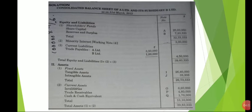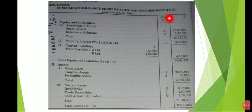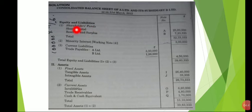Now I will show the statement format for the consolidated balance sheet. It's not the exact balance sheet format, but the same format I use for the consolidated balance sheet. When going according to the statement format for the consolidated balance sheet, we have one particular column, one number column, and one amount column. I'm going to prepare a consolidated balance sheet of A Limited and its subsidiary B Limited.